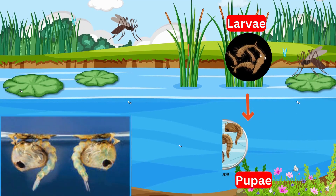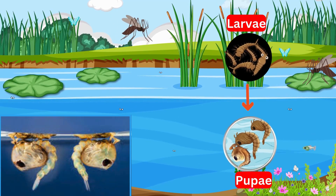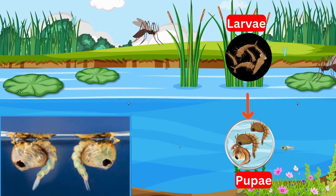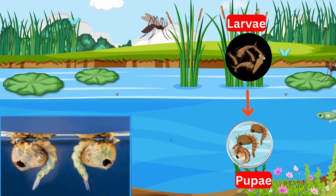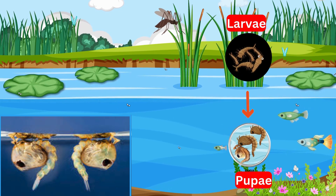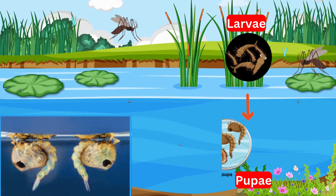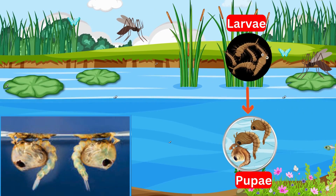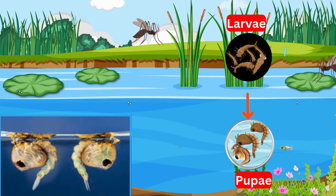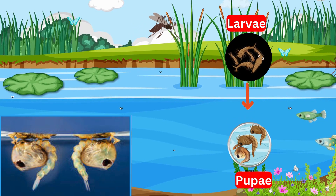Stage 3: Pupae. The larvae turn into pupae, also known as tumblers. During this stage, they don't eat but instead prepare to become adults. The pupa stage lasts a few days.